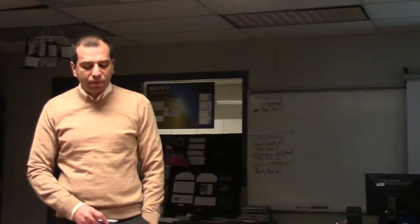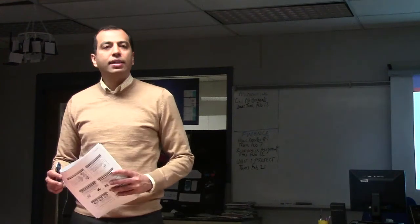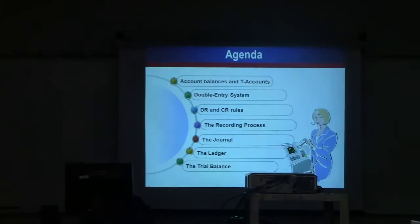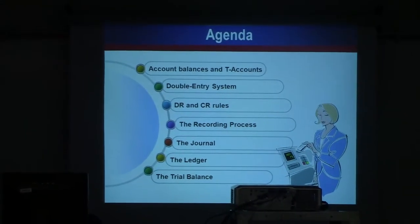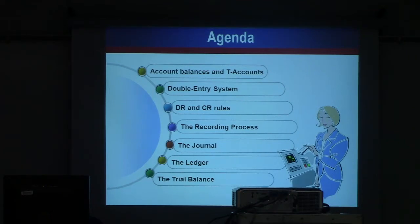This chapter is going to involve a few things. You can see the agenda. We're going to talk about T-accounts and what the word accounts means. We're going to talk about the double entry accounting system, debits and credit rules, the recording process, the journal, the ledger, and the trial balance.